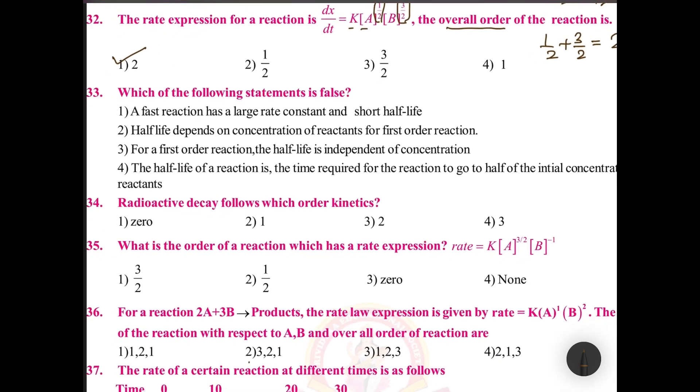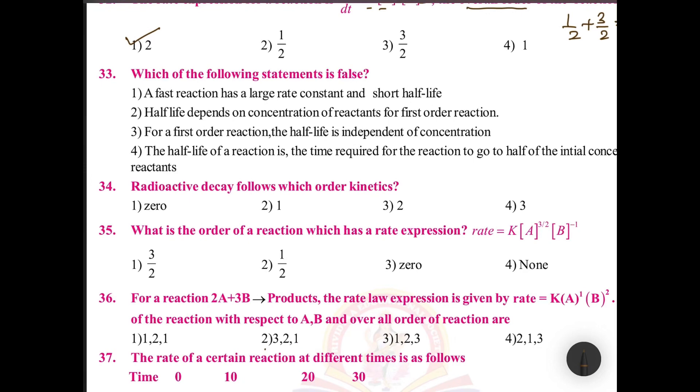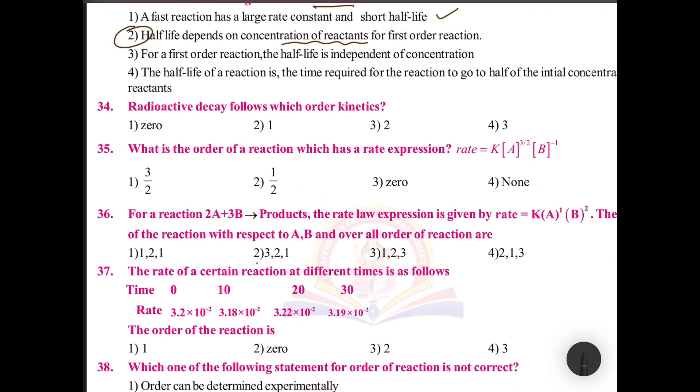Which of the following statement is false? A fast reaction has a large rate constant - that is true. Half-life depends on concentration of reactants for first order reaction is false. Half-life for first order has no relation with concentration of reactants. False statement, single option question, there is no need to go with the remaining.